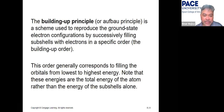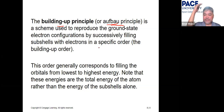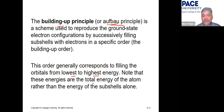To write the ground state configuration, we follow the Aufbau principle — the German word for 'building up.' It's a scheme used to reproduce the ground state by successively filling subshells with electrons in a specific order, filling orbitals from lowest to highest energy.